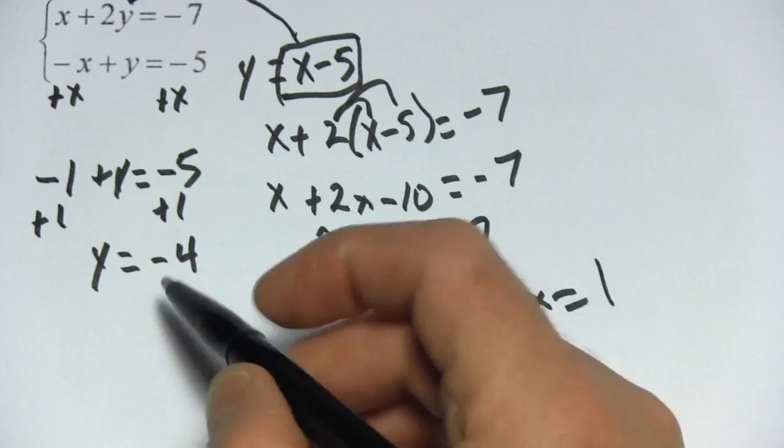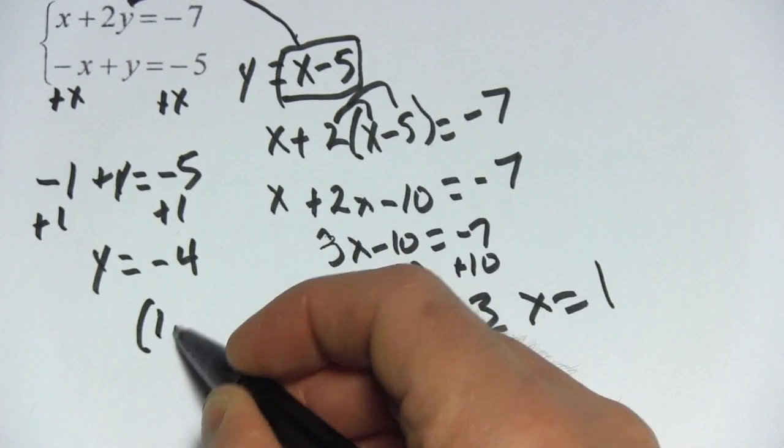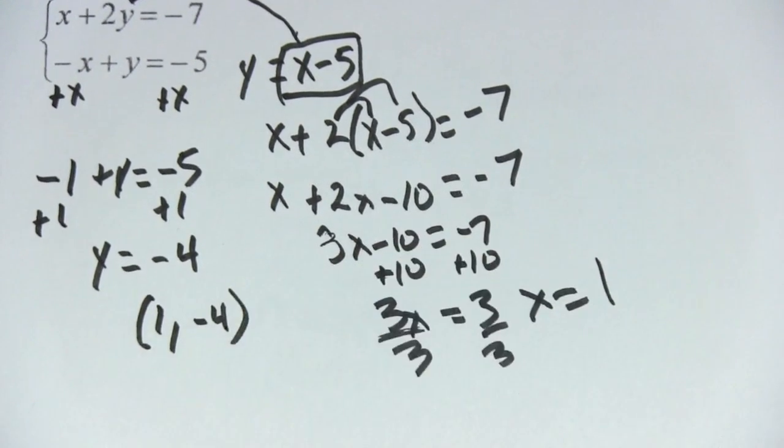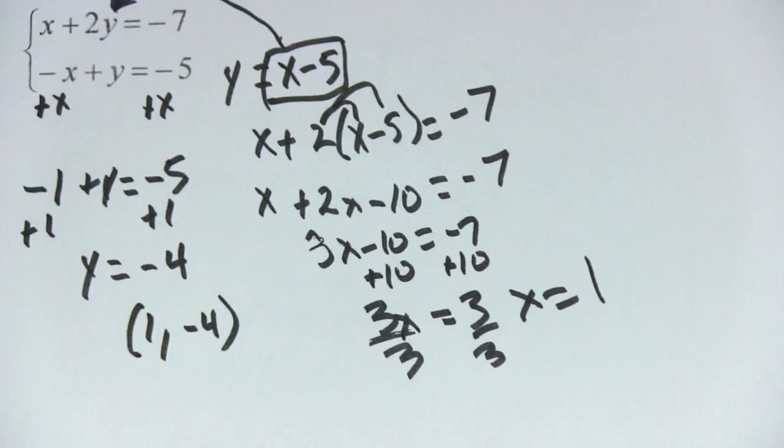And if you want to express this as an ordered pair, it would be x is 1 and y is negative 4. Let's try one more.